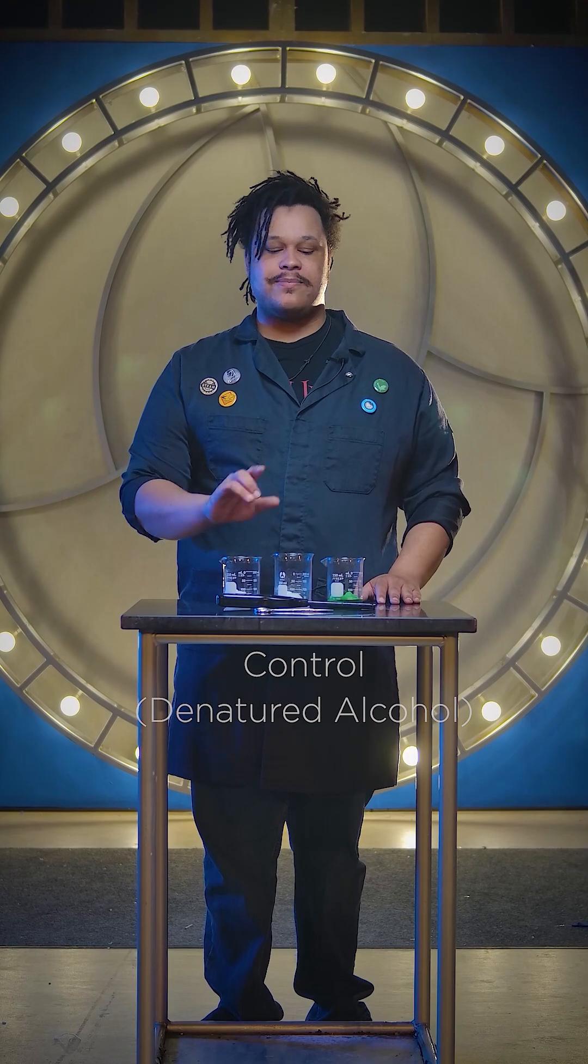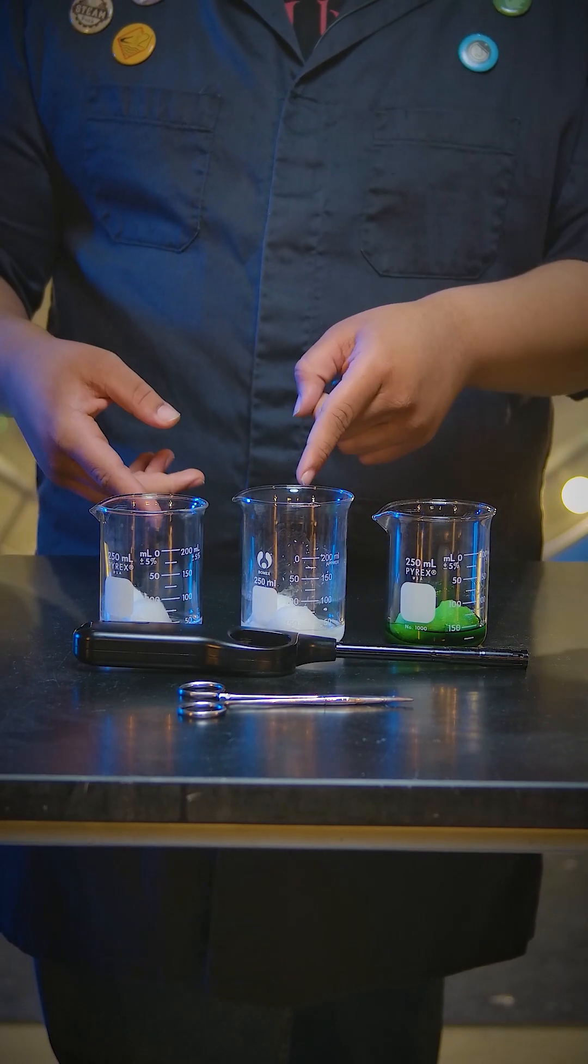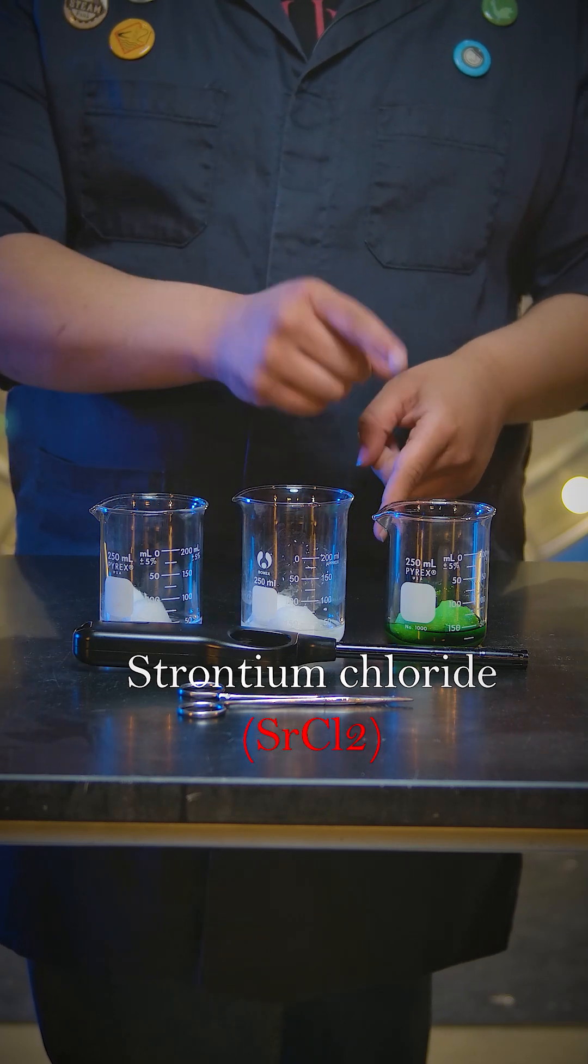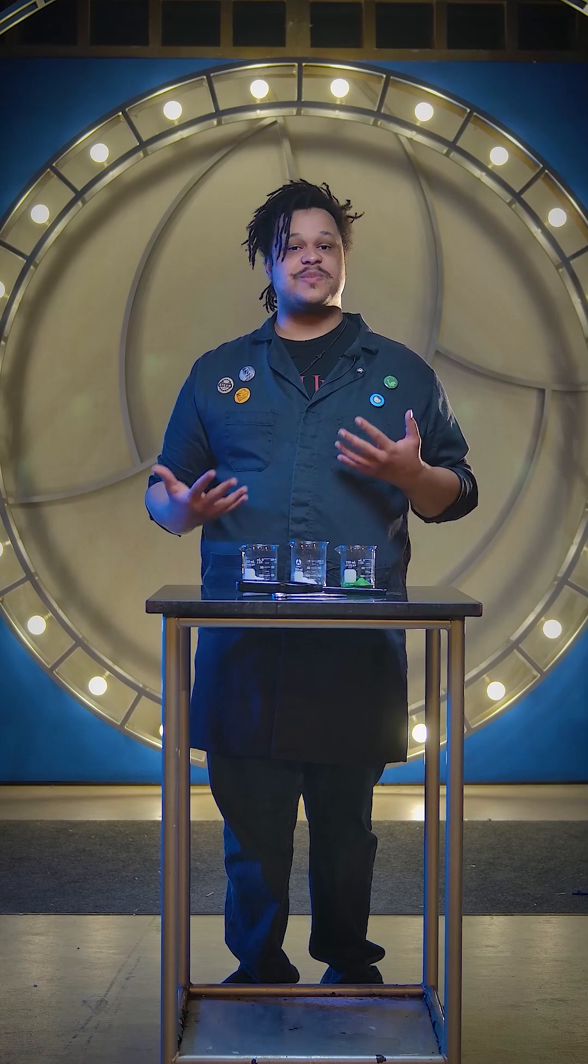in it along with our cotton balls. But these two on the other hand contain both denatured alcohol. This one happens to contain strontium chloride and this one over here contains copper 2 chloride. These are actually some of the chemicals they put in fireworks to give them their special colors. Let's kill the lights and see how this looks.